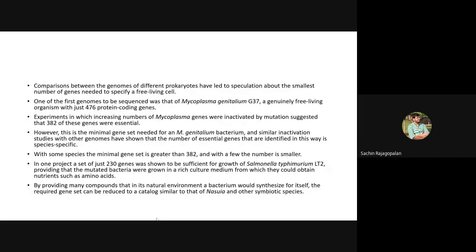Because of genome sequencing technology, the genomes of different prokaryotes have been sequenced and compared. A key question is: what is the smallest number of genes a bacterium would need to live as a free-living cell? This can be identified by comparing the genomes of different prokaryotic organisms. Mycoplasma genitalium is a free-living organism with only 476 genes. By introducing mutations, researchers found that only 382 of those 476 genes were essential for survival.